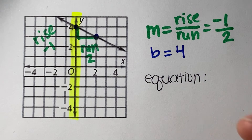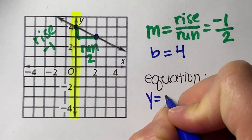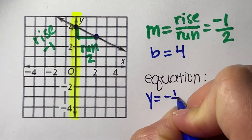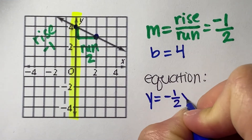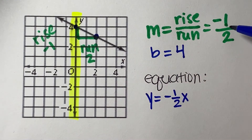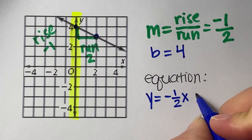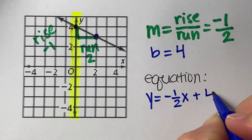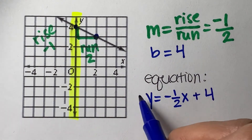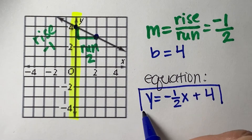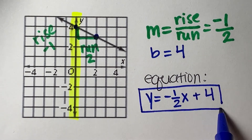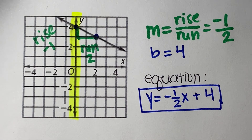Since my rise is negative, the whole fraction becomes negative when you write your equation. So the equation is y equals negative one-half x plus 4, in y equals mx plus b form. If you need more time, pause the video.